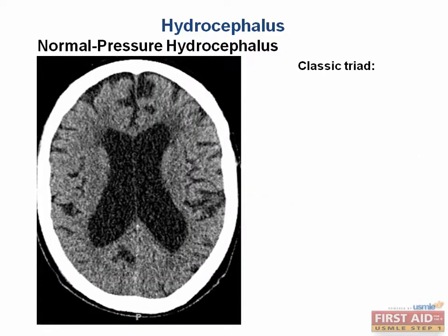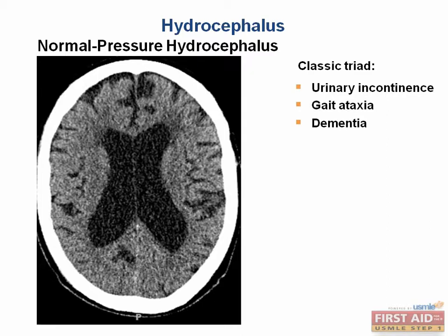Normal pressure hydrocephalus (NPH) is commonly seen in the elderly and is a particular type of communicating hydrocephalus. The ventricles are abnormally dilated but CSF pressure is not elevated. This is thought to be due to impaired CSF reabsorption at the arachnoid granulations. Patients present with the classic triad: urinary incontinence, gait ataxia, and dementia — remembered as wet, wobbly, and wacky. It is important to diagnose as it is a reversible cause of dementia in the elderly.